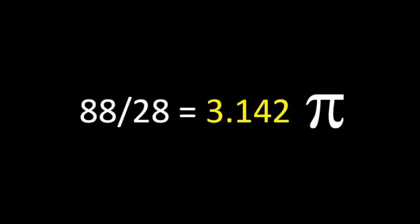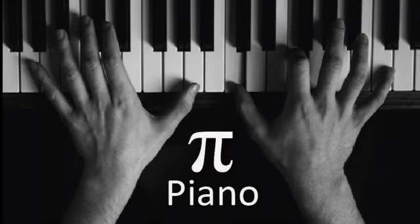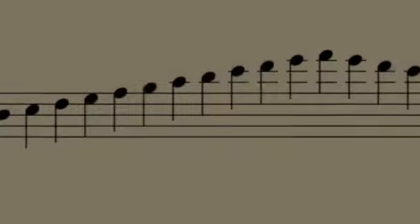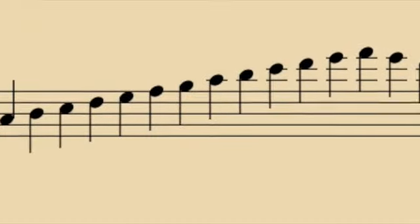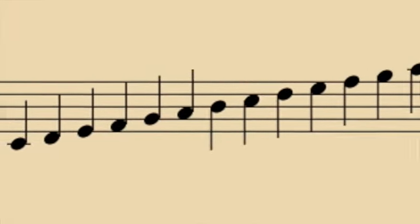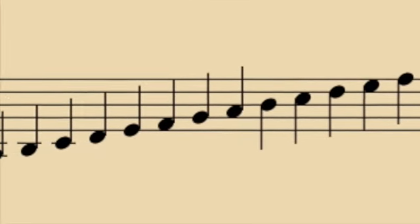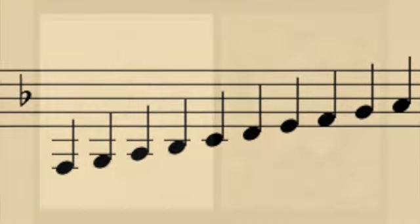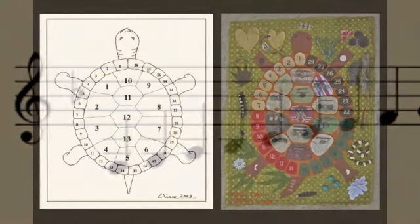The 88 keys of a grand piano divided by the 28 phalanges of your hands giving us pi gives us a little insight into just why it is called a piano. There are seven notes of the major scale and 12 notes of the chromatic scale, with the 13th note being the octave. The numbers 13 and 28 can be used to construct a calendar.